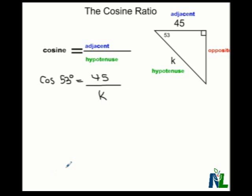Now in this case, since the variable K is the hypotenuse in the denominator of the fraction, we have to do a little bit of algebra. We do cross multiplication to bring the K up.